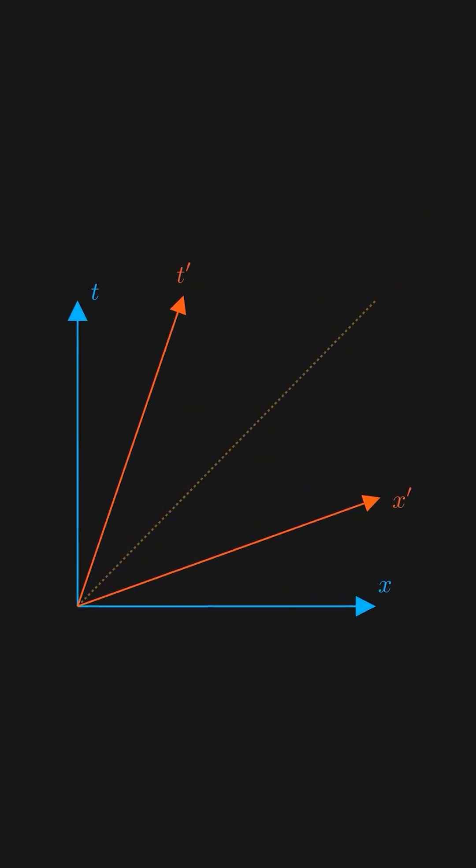This change in the geometry has the consequence of the relativity of simultaneous events. Let's see how it works.